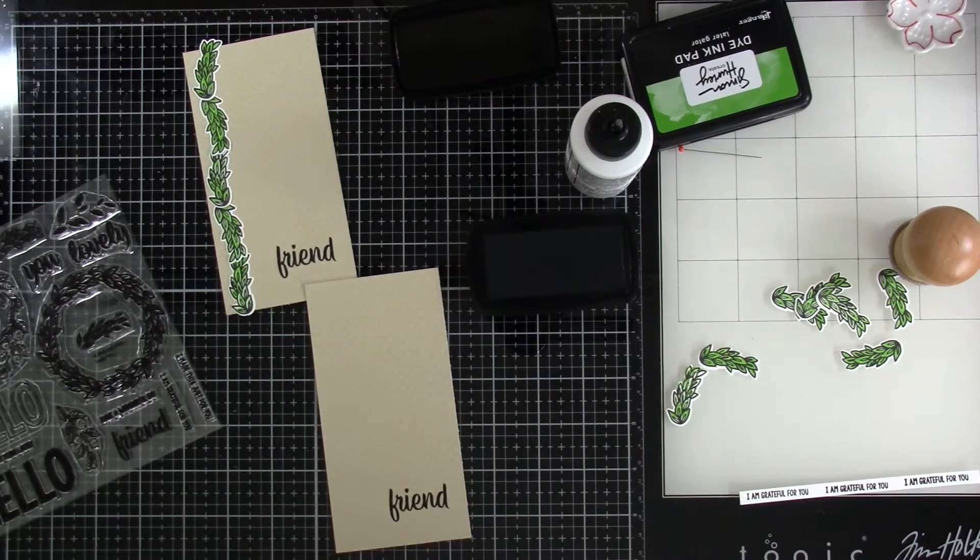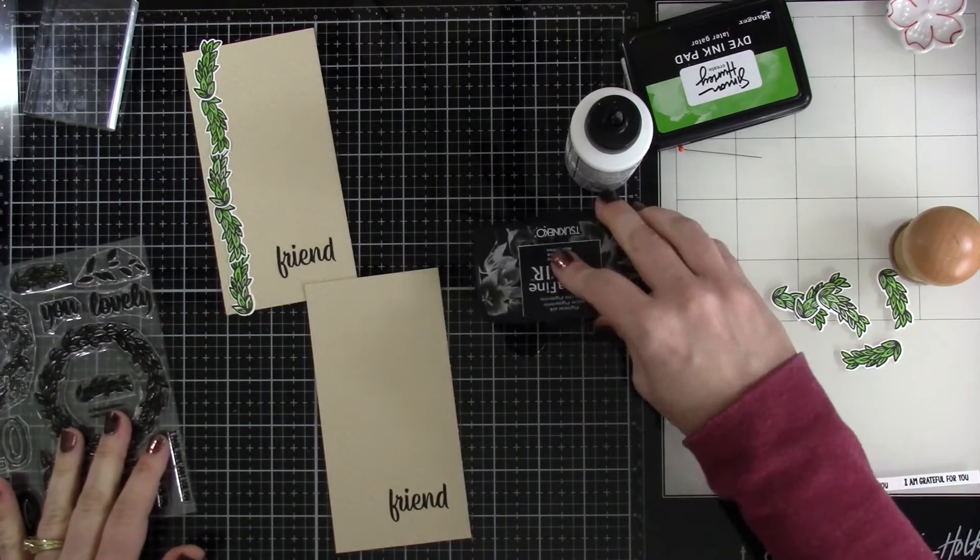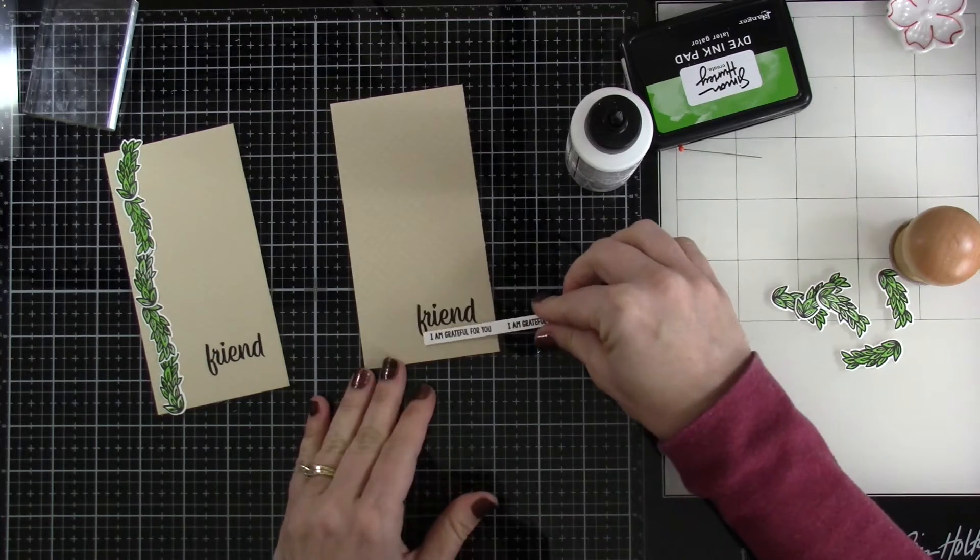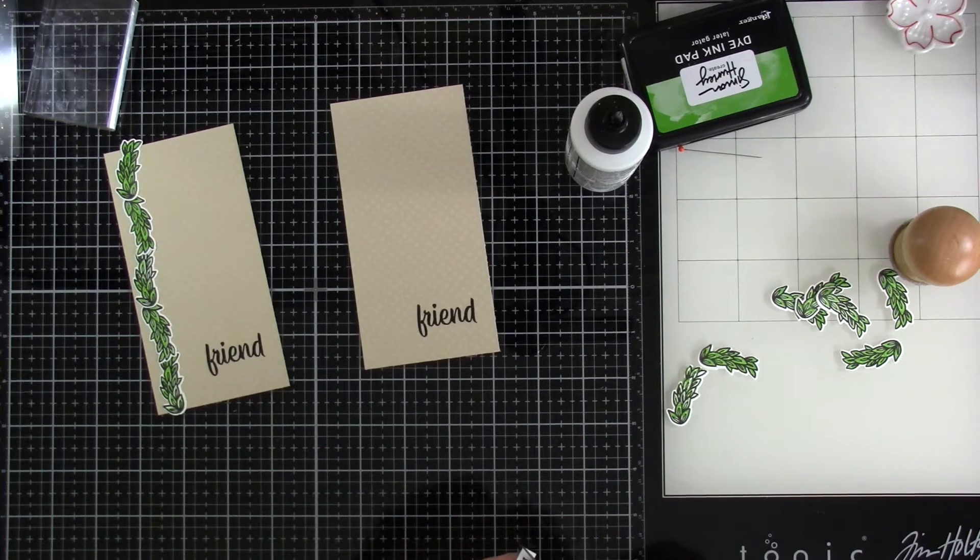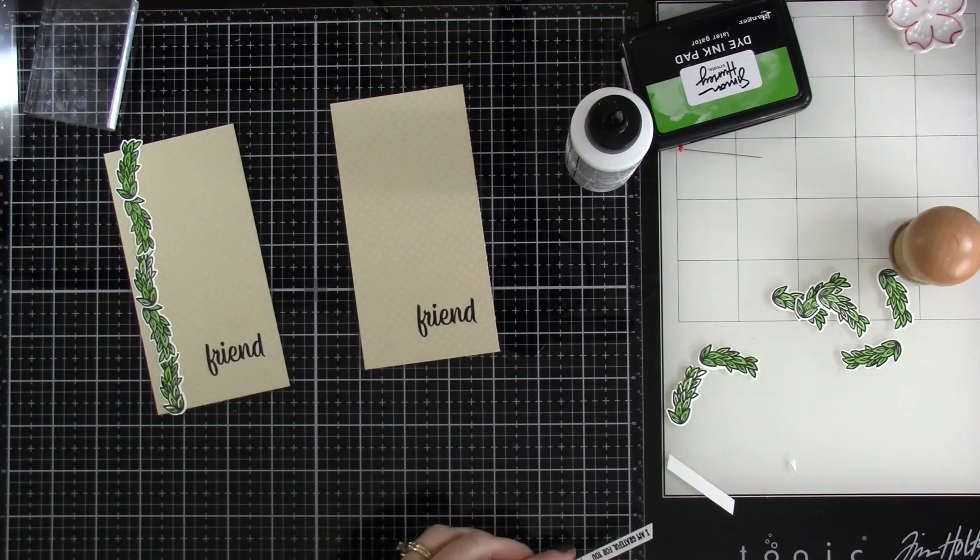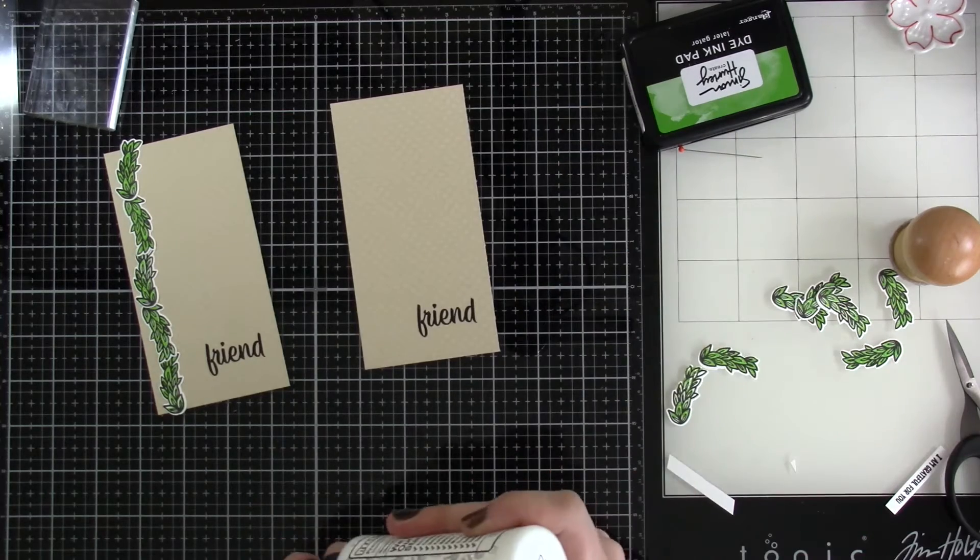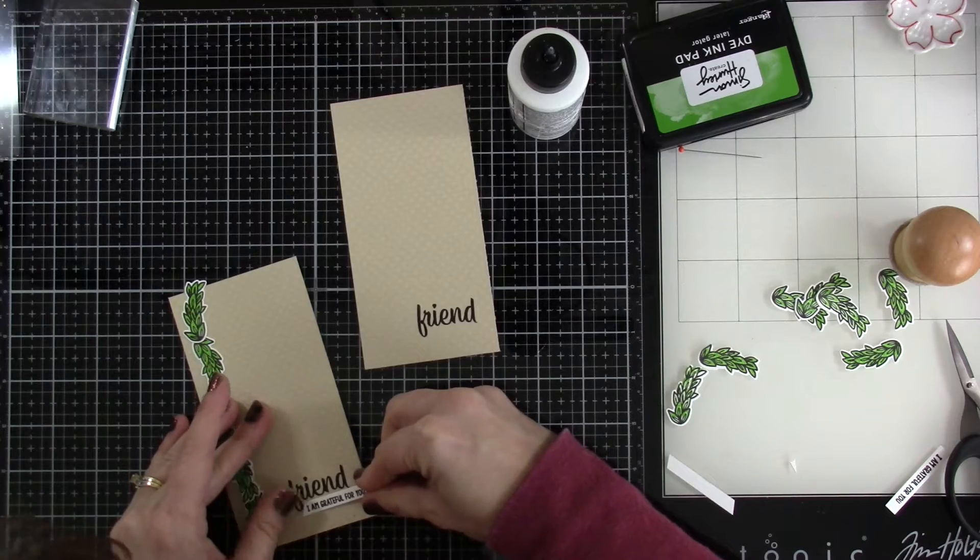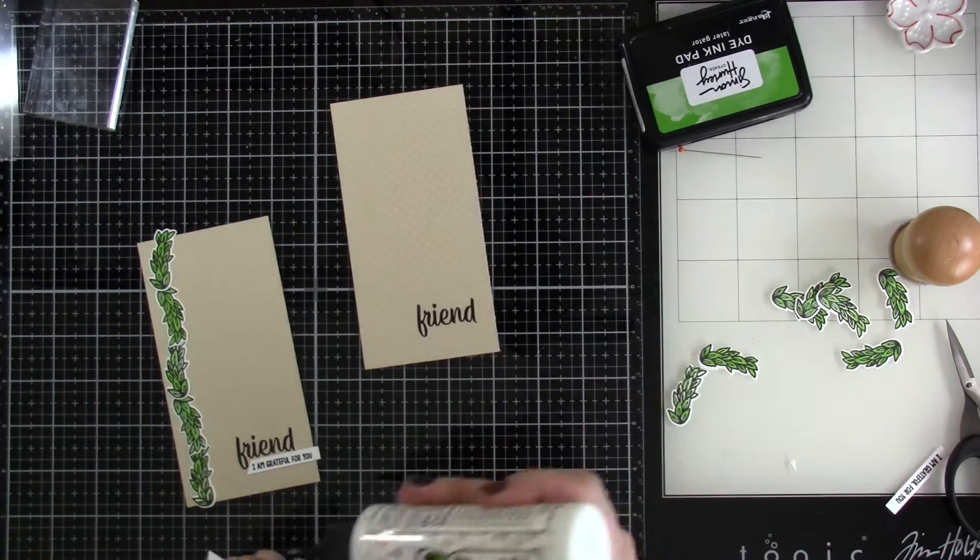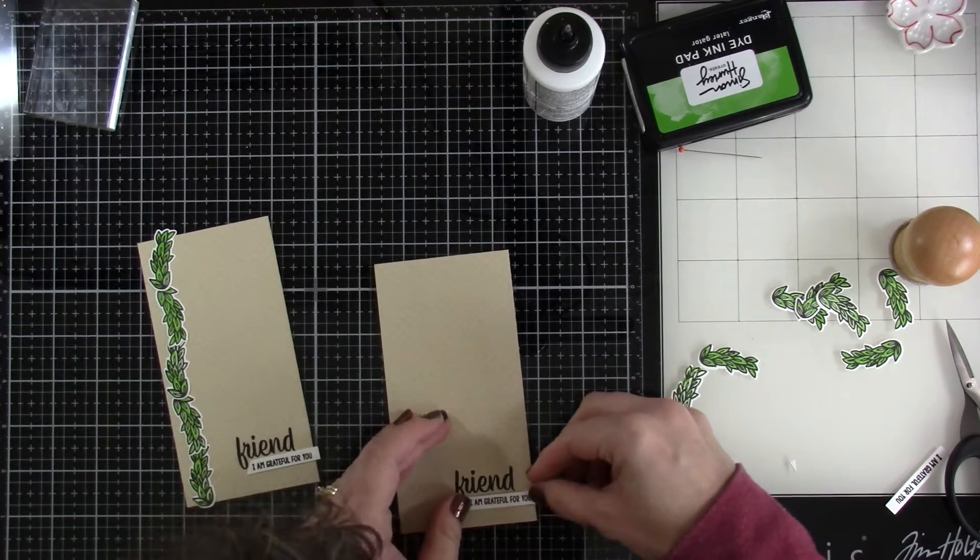So I'm going to trim that down after I stamp it on both pieces. I figure when I'm making mini slim line, I might as well make at least two. Because a mini slim line, if you have 12x12 cardstock, you can get four cards out of one piece of 12x12. So now I'll just take my snips and snip down these pieces, just the little sentiments, so that I can attach those to our card panel using that same liquid glue.